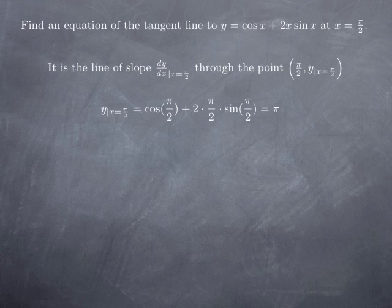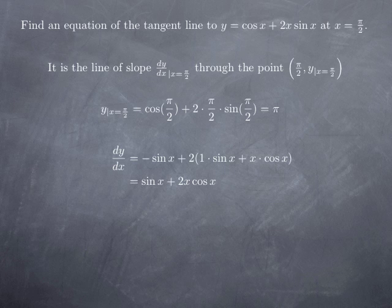As for the slope, we need to first calculate the derivative of y with respect to x. The derivative of cosine is negative sine. Then we have 2 times the derivative of the product x times sine x. Using the product rule: the derivative of the first factor x gives us 1, multiplied by the second factor unchanged gives sine x, plus x multiplied by the derivative of sine x — in other words, x multiplied by cosine x. After simplification, we obtain sine x plus 2x cosine x.